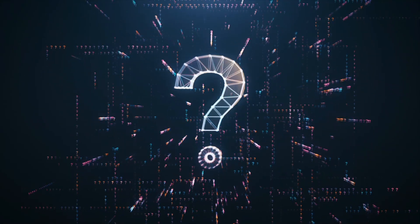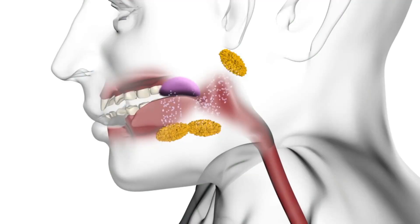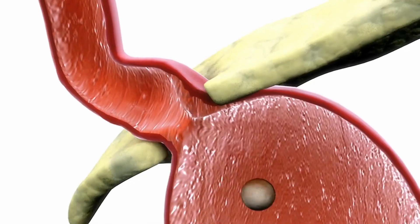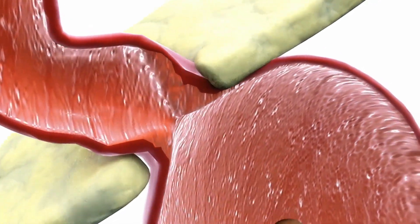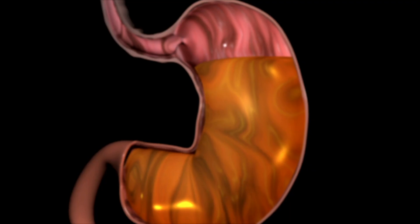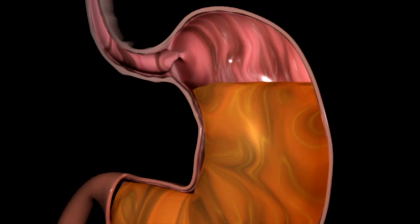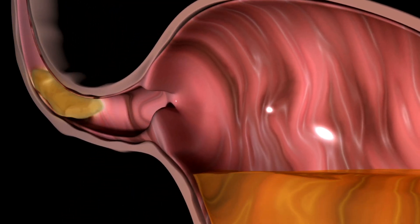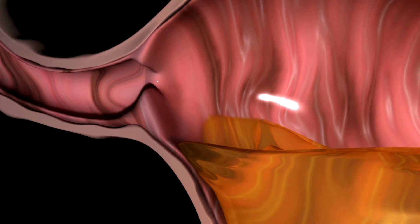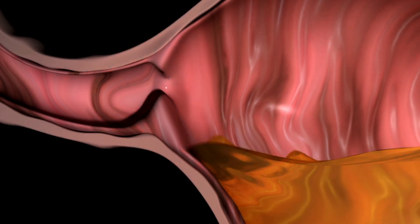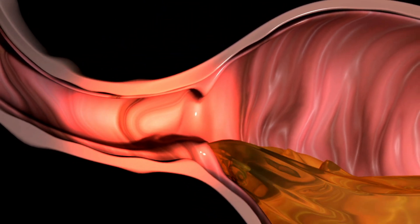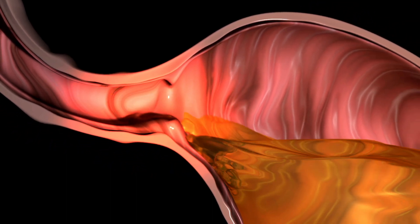So how does this condition occur? When we eat food, it passes down the esophagus and moves into the stomach. The stomach has a lower esophageal sphincter which closes as soon as food enters, but in abnormal conditions it remains open and stomach acid moves back into the esophagus, leading to that burning sensation.